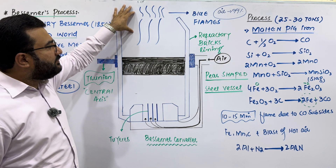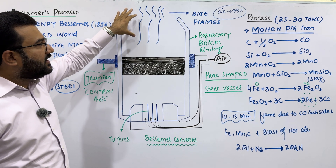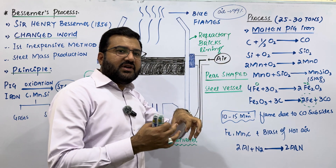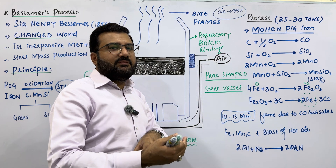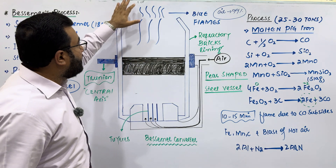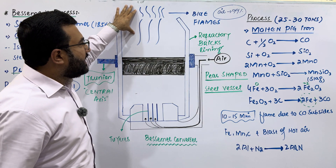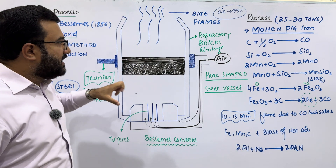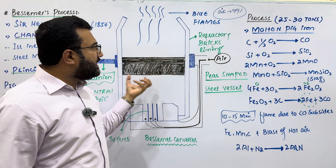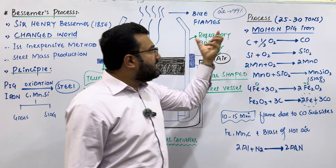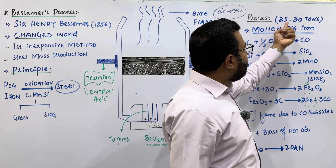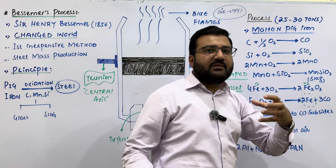At the mouth of the Bessemer converter, carbon monoxide blue flames can be seen, because carbon burns with a blue flame. When carbon burns, carbon monoxide is produced, and the blue flames of carbon monoxide can be seen at the mouth of the converter. This is a schematic diagram of the Bessemer converter.